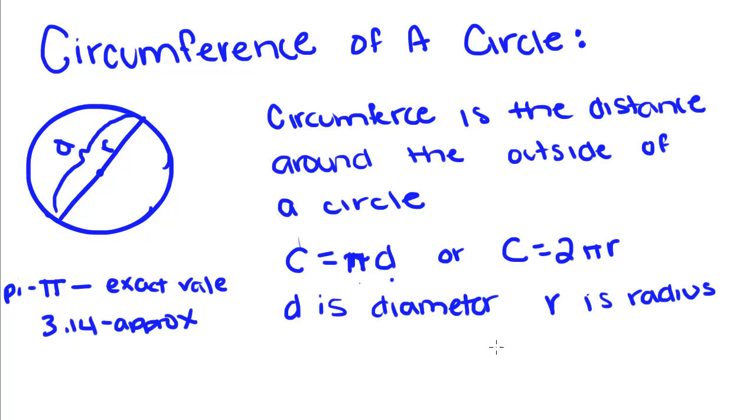r is the radius, which is d equals 2r, because the radius is just this piece right here, and diameter is this whole part.